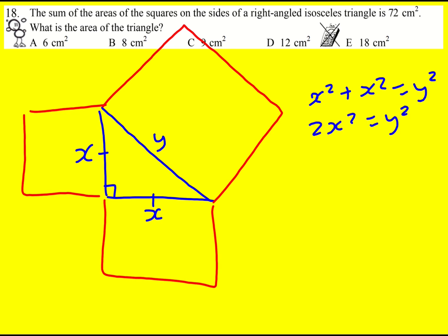And we also know that the sum of the squares in total, so that is going to be 2x squared plus y squared. The sum of the areas of the squares is equal to 72.